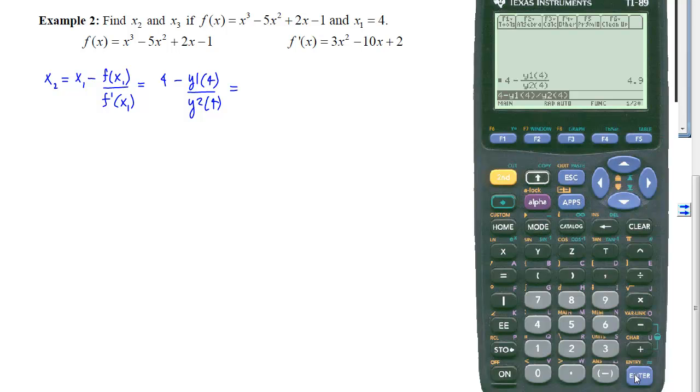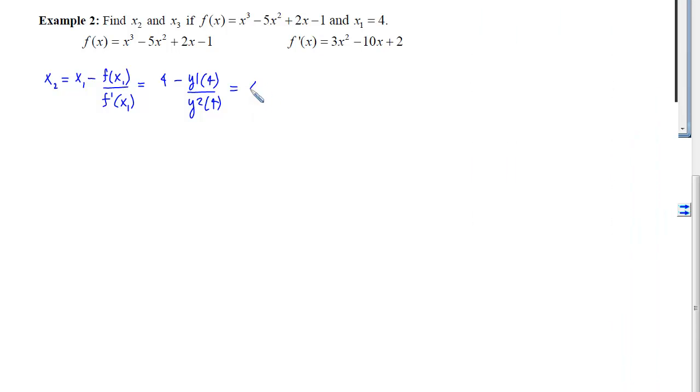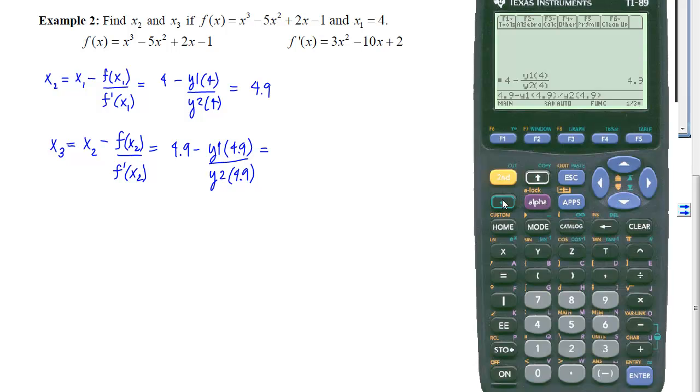And we can see that x sub 2 is 4.9. We're now going to re-do this process, thus the iterative nature, and get x sub 3 is x sub 2 minus f of x sub 2 over f prime of x sub 2, and that will give us a 4.9 minus a y1 of a 4.9 divided by a y2 of 4.9. Put that into your calculator, diamond, enter, and we get 4.6443.